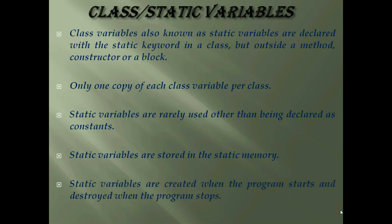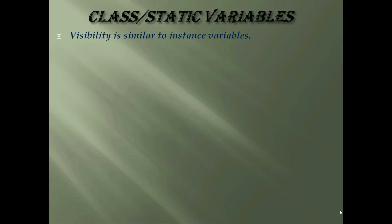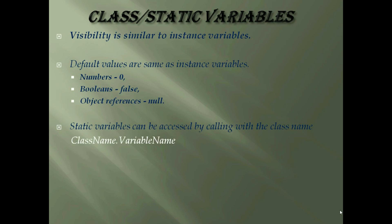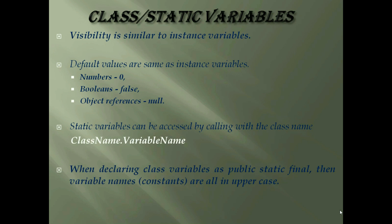Static variables are created when the program starts and destroyed when the program stops. Visibility is similar to instance variables. However, most static variables are declared public since they must be available for users of the class. Default values are same as instance variables. For numbers, the default value is 0. For booleans, it is false. And for object reference, it is null. Static variables can be accessed by calling with the class name as class name dot variable name. When declaring class variables as public static final, the variable names are all in uppercase. If the static variables are not public and final, the naming syntax is same as instance and local variables.